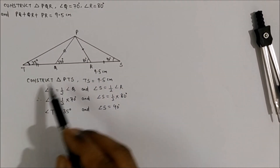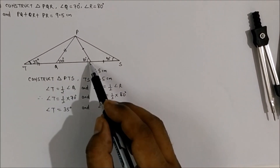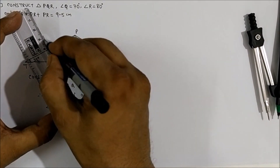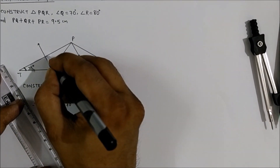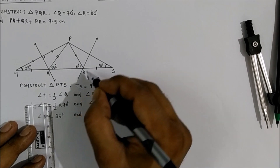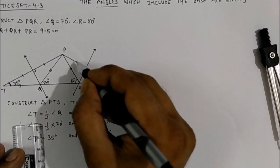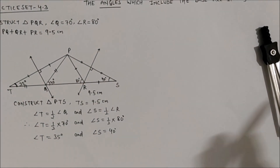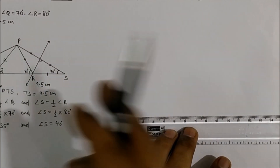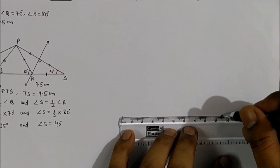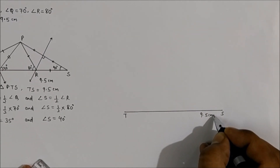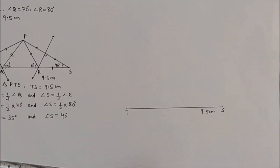We will construct triangle PTS with this information. To locate points Q and R, we will draw the perpendicular bisector of PT and the perpendicular bisector of PS. That completes the rough figure. Now let us start the actual construction. First, draw the base TS equal to 9.5 centimeters.